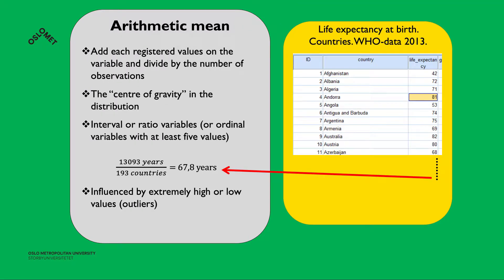To find the arithmetic mean, we add each registered value on the variable and divide by the number of observations. This is the center of gravity in the distribution. The variable has to be at the interval or ratio level, but we can also use ordinal level variables with at least five values. In our example, summing all life expectancy values and dividing by the number of countries gives a mean life expectancy of 67.8 years.